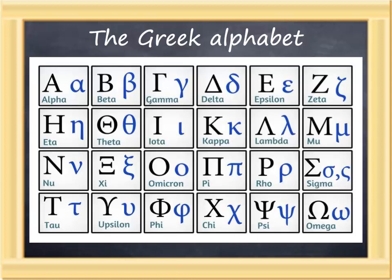Epsilon is a short E, as in met. Zeta is similar to the last letter in the English alphabet; it's like the Z in days. Eta is a long E sound, like the EY in obey. Theta is a single Greek letter equivalent to two English letters together — TH, as in thing.